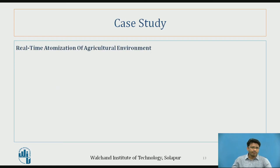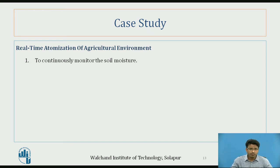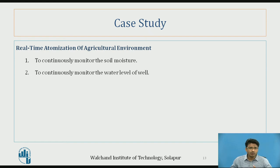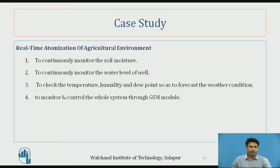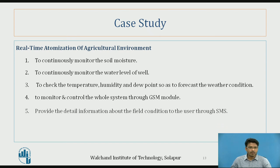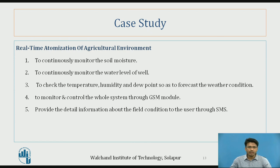Now let's see a case study: the real-time automation of an agriculture environment. To implement this, we need to consider parameters such as continuously monitoring soil moisture using sensors, monitoring the water level of the well, checking temperature, humidity, and dew points, forecasting weather conditions, and monitoring and controlling the whole system through a GSM module. Additionally, the system provides detailed information about field conditions to the user via SMS. These are independent tasks, each with specific sensors, and all information is sent to the farmer. For this purpose, a real-time operating system is used.